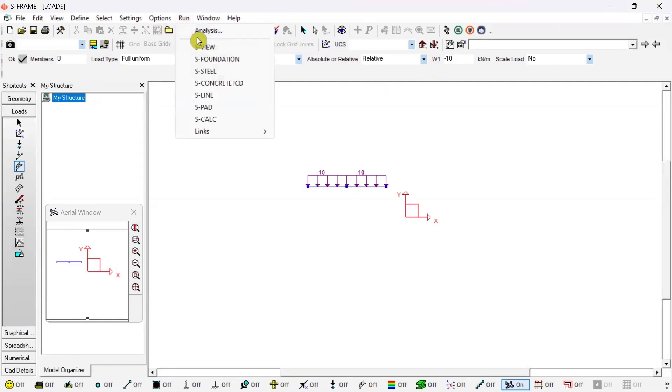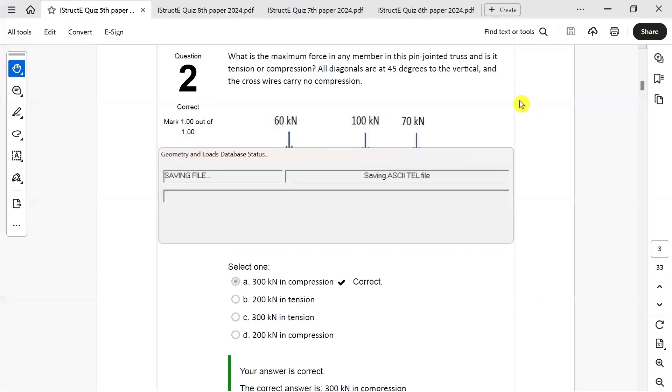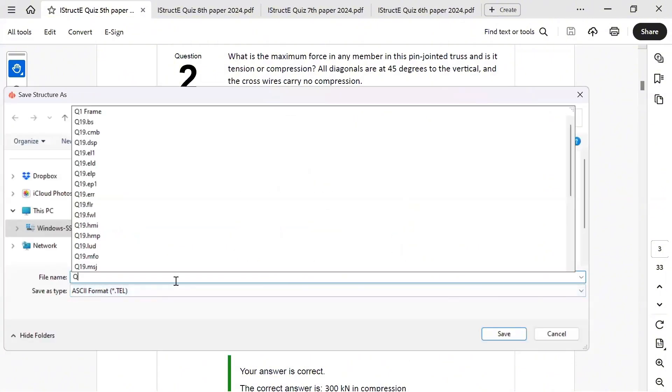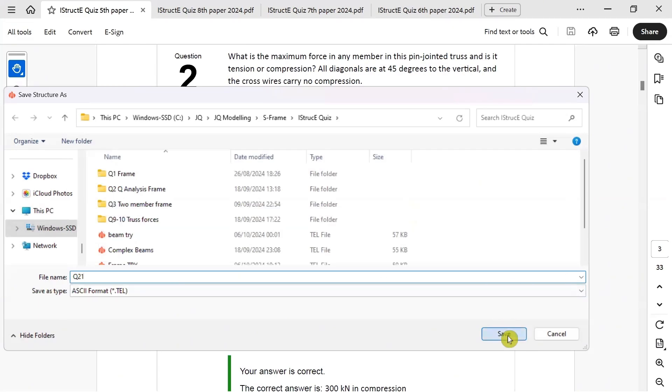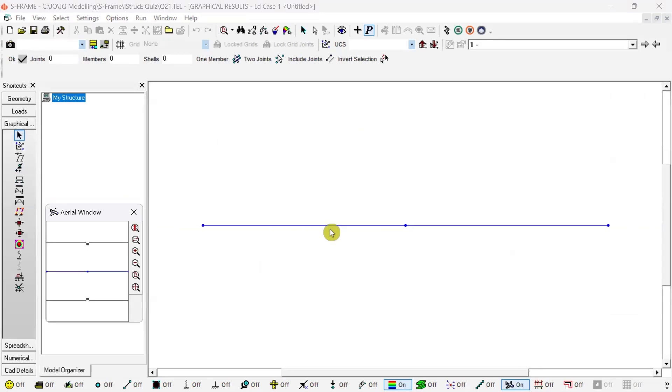Now it is ready for analysis. So go to Run Analysis, Linear Static, click OK, and it will ask you to save the file. I will say Q21, save it with any file.